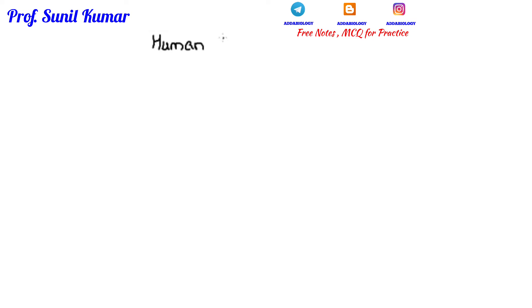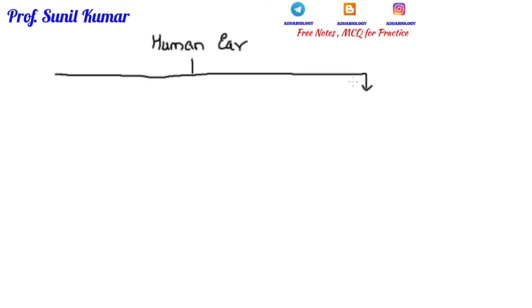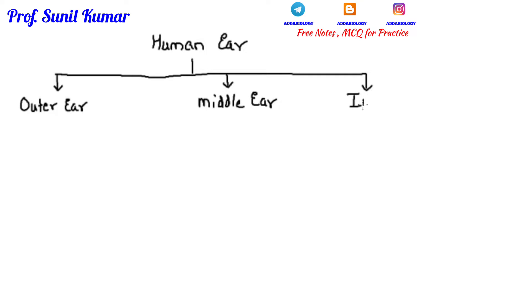Hello friends. In this video we are going to discuss one of the very important topics for the NEET exam, that is the human ear, and we are going to discuss the internal structure of the human ear. The human ear basically consists of three major parts: the outer ear, middle ear, and the inner ear.